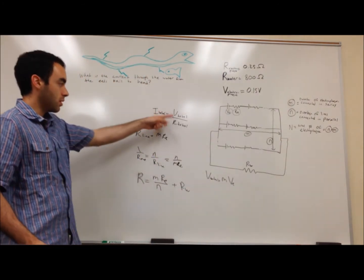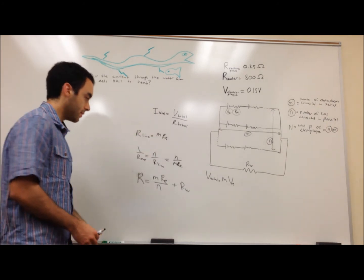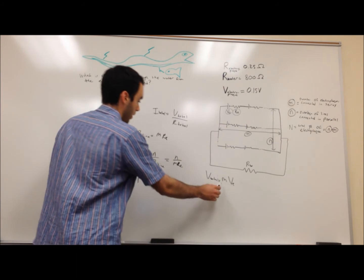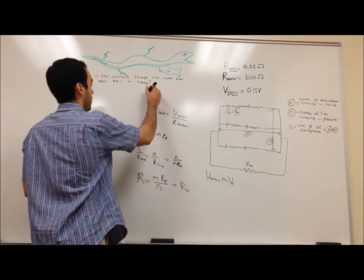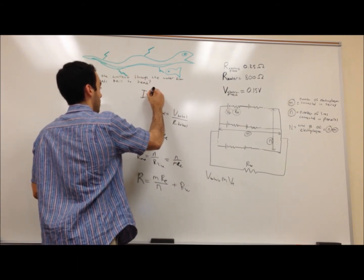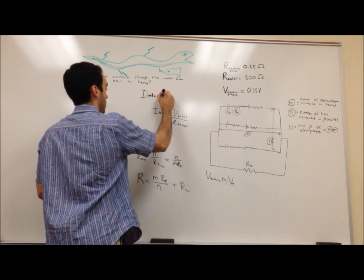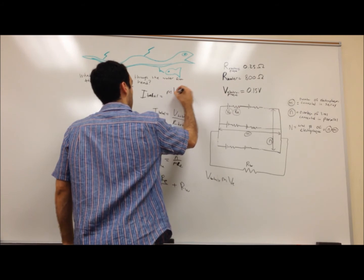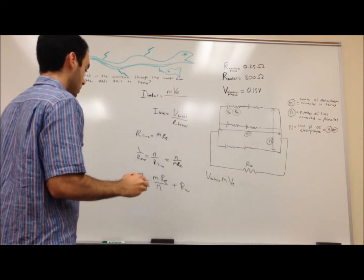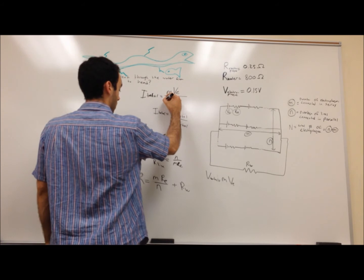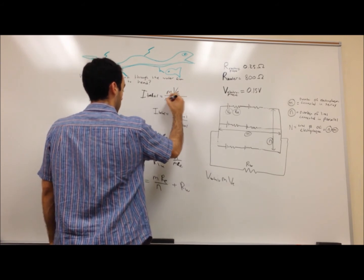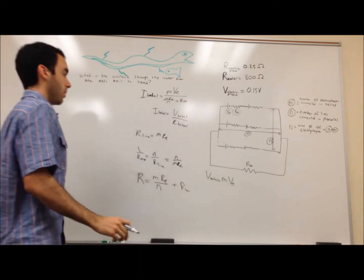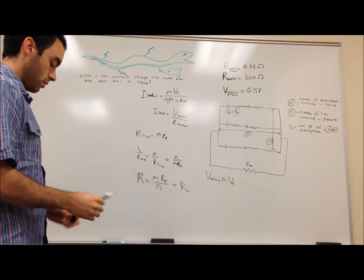Now that we have total voltage and total resistance, we can find our expression for total current. So all we have to do is plug in these values, and I'll write it above over here. We have I_total equals m times V_E over the resistance, which is m R_E over n plus R_W. So now we have an expression for the total current.